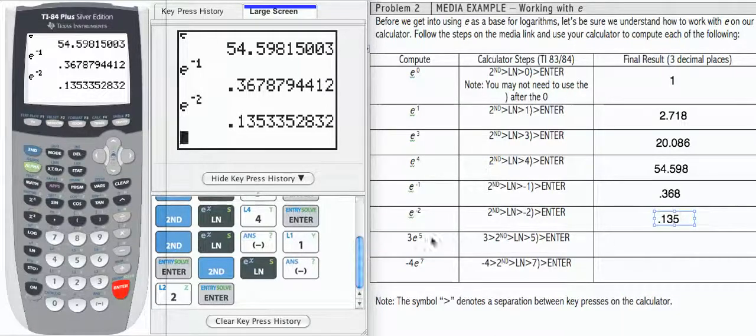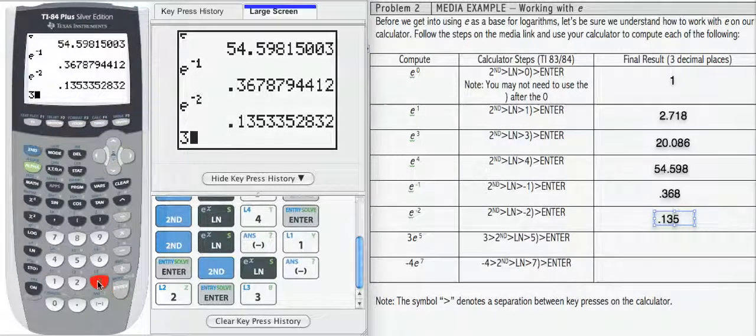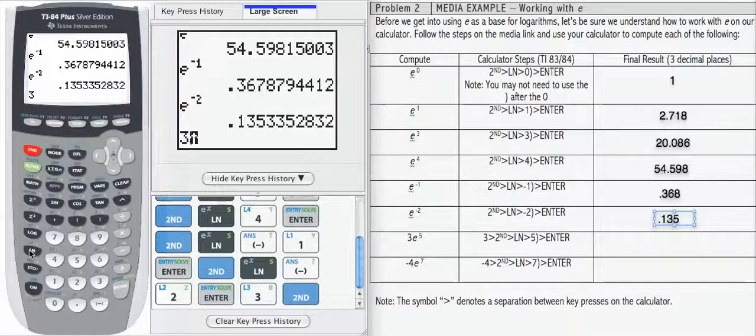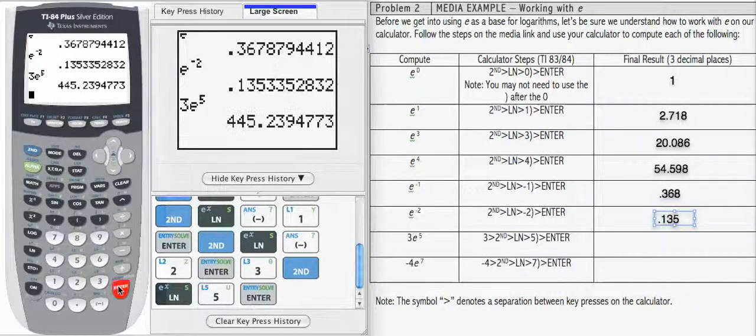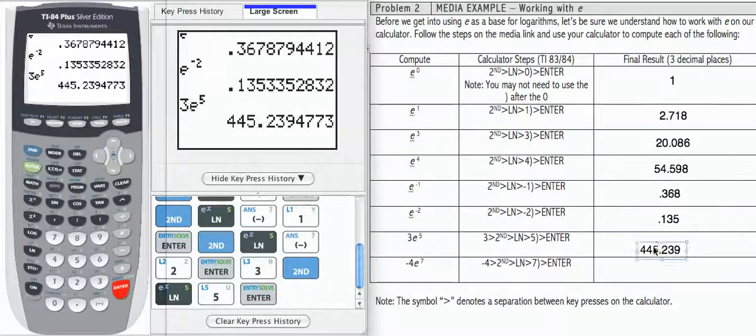Now let's work with a coefficient, three times. I don't actually have to enter the times, I can just enter e to the fifth, press enter. I get 445.239, that's rounded to three decimals.